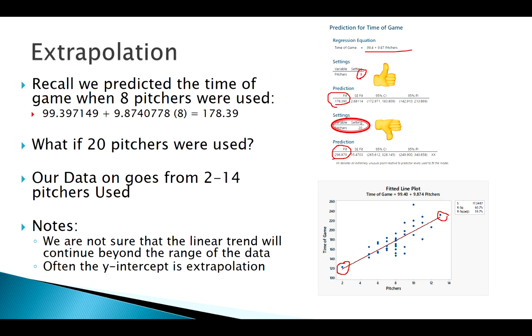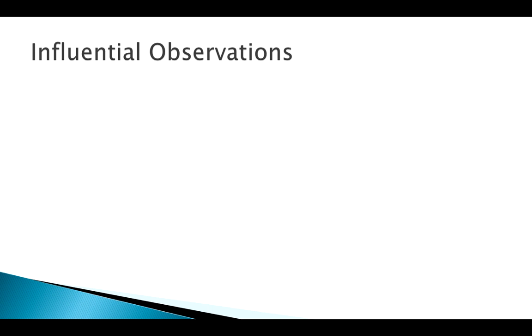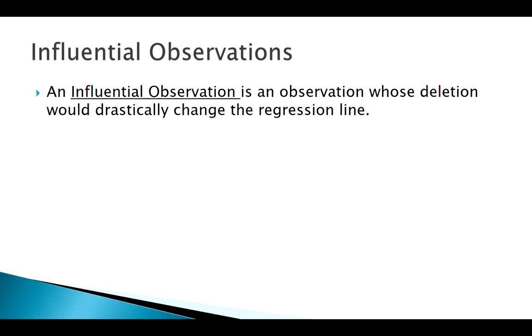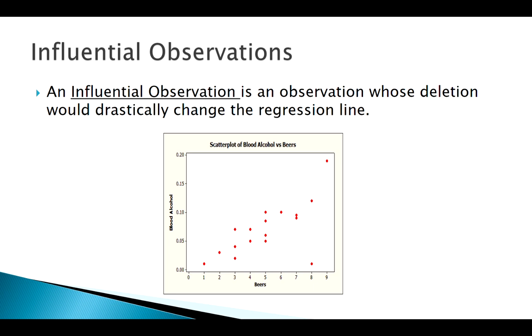Next thing we want to watch out for are the presence of what we would call influential observations. All right, so one way of defining an influential observation is a point that has a big effect on the calculation of that regression line. So let's think about a new example here. Here we've got a scatter plot of the number of beers someone has drank and their BAC, right? Obviously we would think there would be a relationship. The more beer you drink, the higher your BAC.